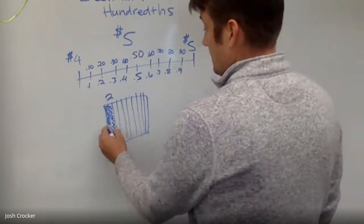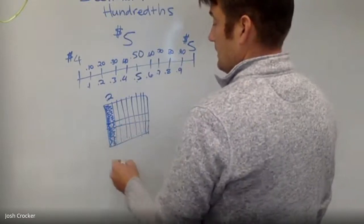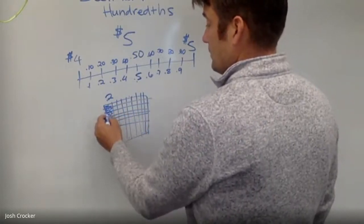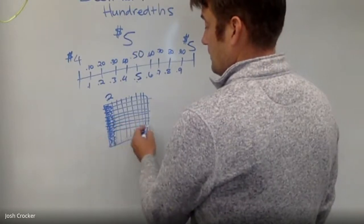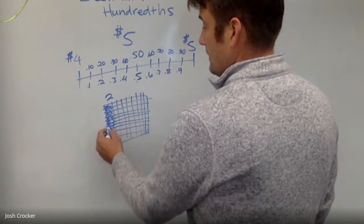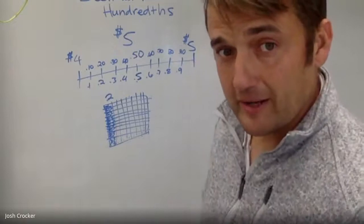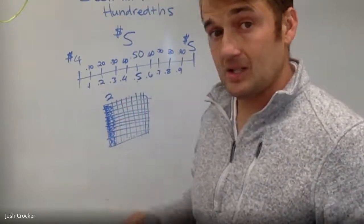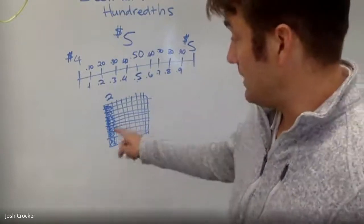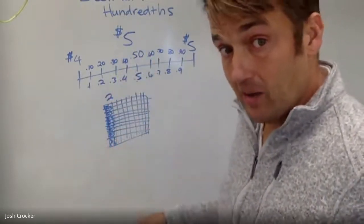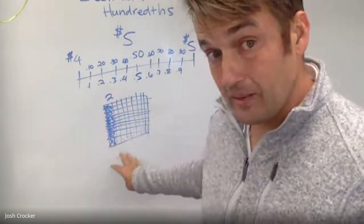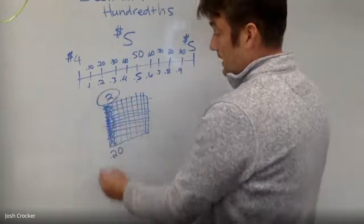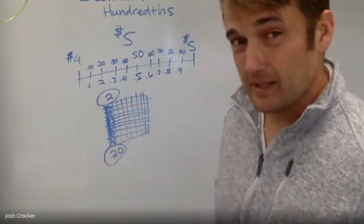Now let's say I take this model and break it into a hundred pieces. It's not the best job, but it has a hundred pieces. I still have those two rows colored — I didn't change the amount of colored space — but now instead of being two rows (two tenths), now it's 20 little boxes, it's 20 hundredths. And those two amounts — two tenths and 20 hundredths — are equal, just like when we did equivalent fractions.